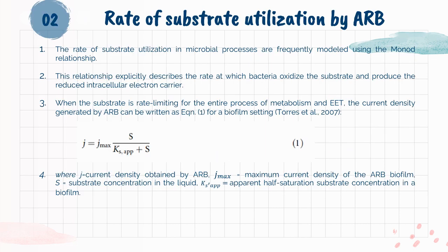Part 2 of Section 2 is the Rate of Substrate Utilization by ARB. The rate of substrate utilization in microbial processes is frequently modeled using the Monod relationship. This relationship explicitly describes the rate at which bacteria oxidize the substrate and produce the reduced intracellular electron carrier. When the substrate is rate-limiting for the entire process of metabolism and EET, the current density generated by ARB can be written as Equation 1 for a biofilm setting, where J is current density, J-max is maximum current density of the ARB biofilm, S is substrate concentration in the liquid, and K-s-apparent is the apparent half-saturation substrate concentration in a biofilm.